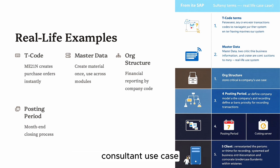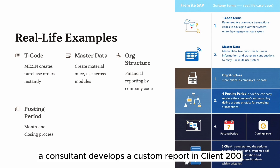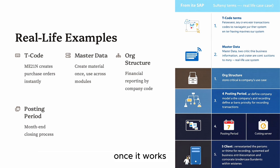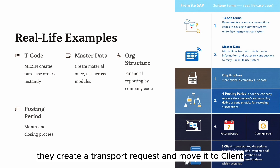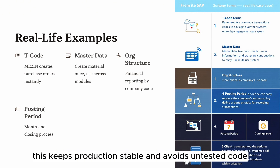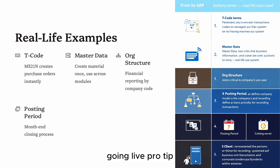Consultant use case: a consultant develops a custom report in Client 200 and tests it with dummy data. Once it works, they create a transport request and move it to Client 300. This keeps production stable and avoids untested code going live.